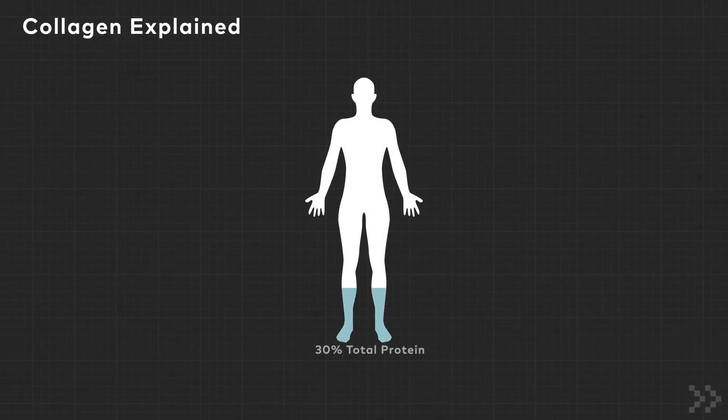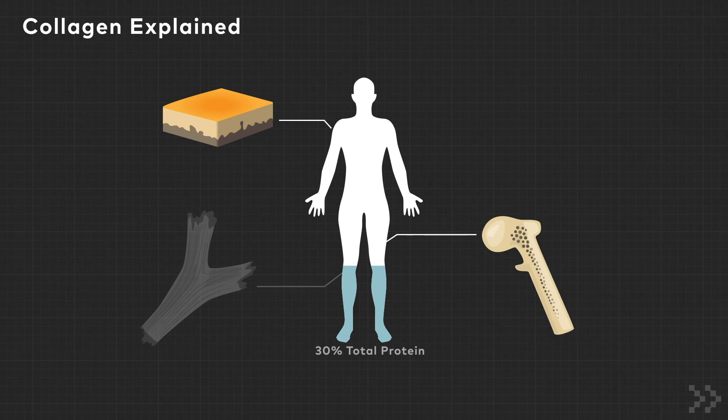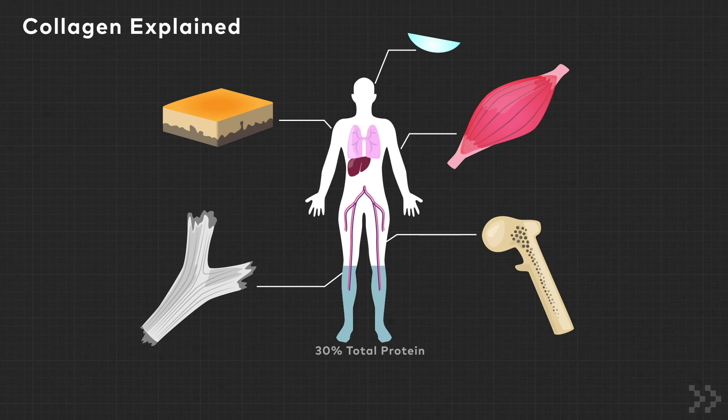Collagen is the most abundant protein in the human body. Type 1 collagen is a major structural component of skin, bone, tendon, and other tissues across the body like lung, liver, cornea, and blood vessels.